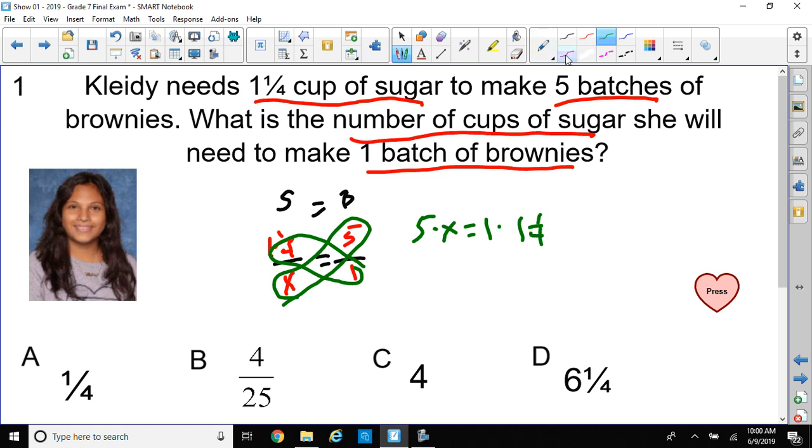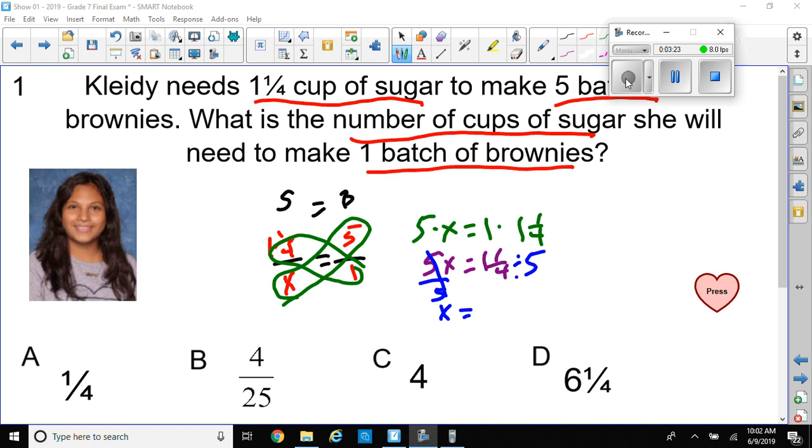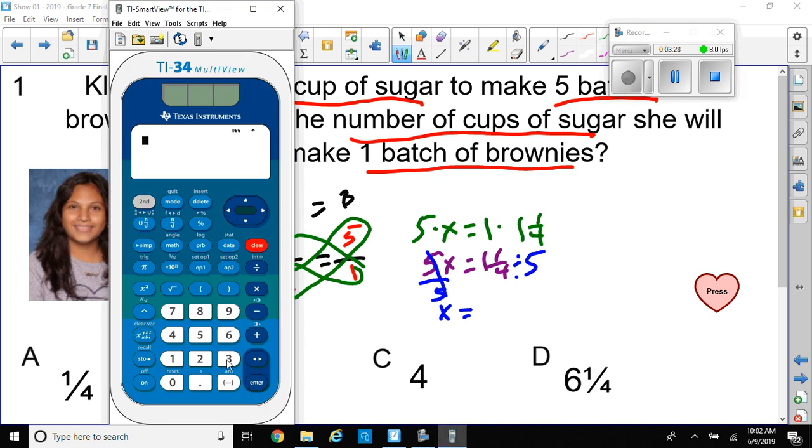Alright. So, five times X is five X. One times one and one-fourth is just one and one-fourth. And now, all I have to do is divide that by five. That way, the fives will cancel out, leaving me with X equal to. I can write divide like this by five because I'm going to get my calculator to deal with this. Okay. Got my calculator. So, let me type in one and one-fourth.